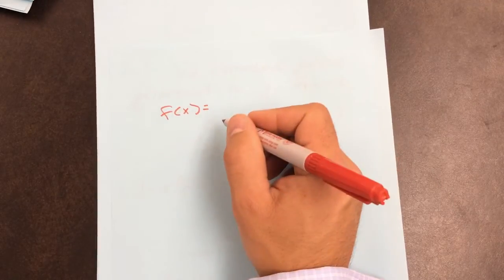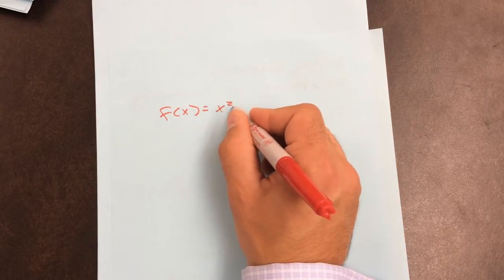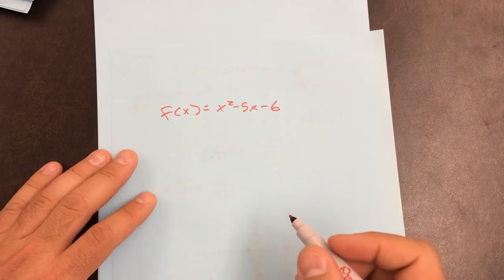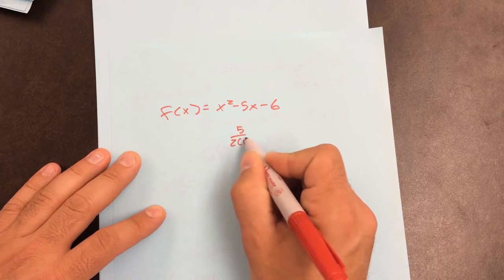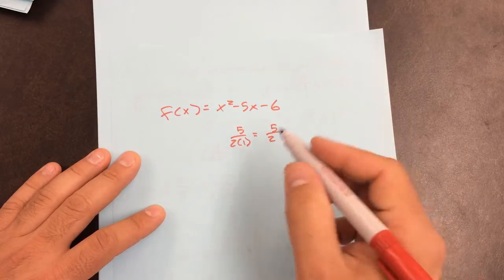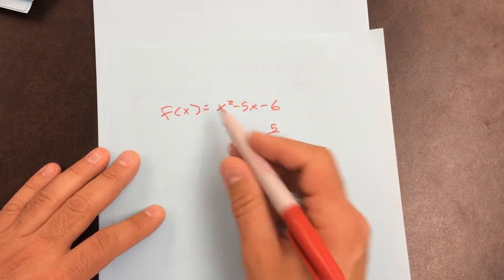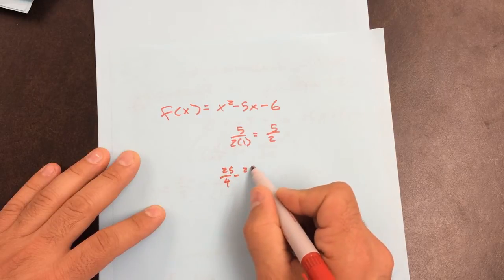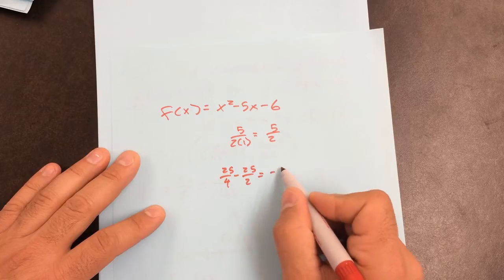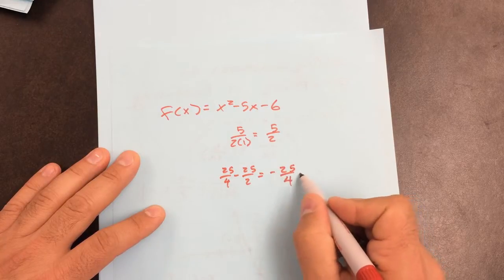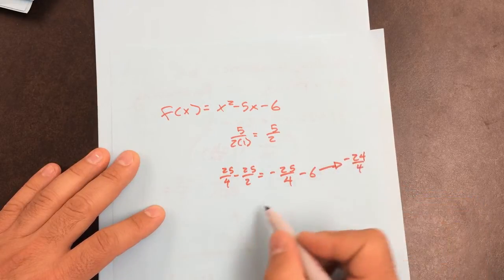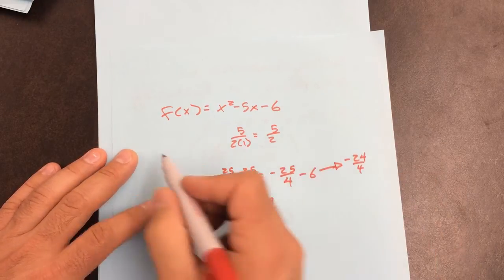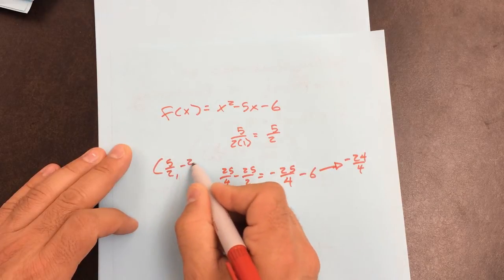I'll do another example. If I give you a function rule that looks like this, the first thing we've got to do is find the vertex. The vertex here is going to be negative B, which is 5, over 2 times A, which is 1, giving 5 over 2. So that squared is 25 over 4, minus 25 over 2, which is negative 25 over 4, minus 6, giving negative 29 over 4. So my vertex is 5/2, negative 29/4.